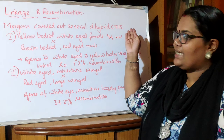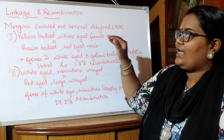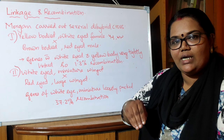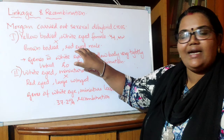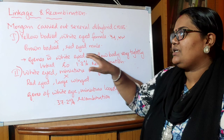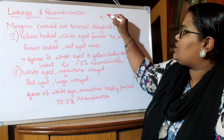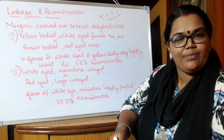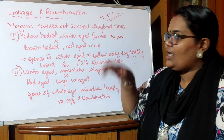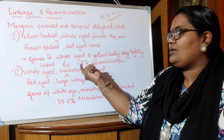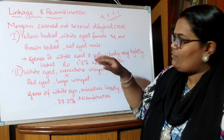Morgan carried out several dihybrid crosses from which we understand linkage and recombination very clearly. He crossed yellow-bodied, white-eyed female Drosophila with brown-bodied, red-eyed male, and obtained a new combination. According to Mendel, the F2 phenotypic ratio must be 9:3:3:1. But Morgan did not get that ratio. He found only 1.3% new varieties — the rest were the white-eyed, yellow-bodied Drosophila, which was the parental character.